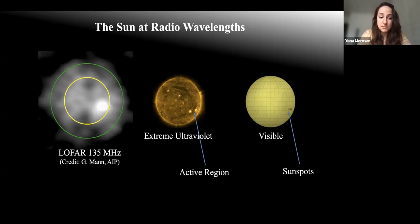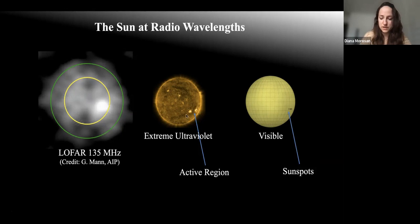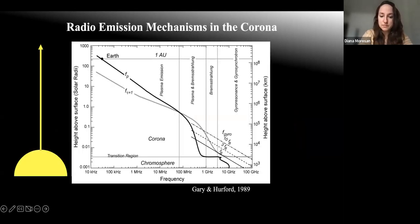We're familiar with what the sun looks like in visible light, with sunspots. At other wavelengths, such as extreme ultraviolet, we see the solar corona. In UV, above sunspots, we see bright regions called active regions, where most solar activity originates. If we go to radio, it's not such a pretty picture. All we see is a very fuzzy blob, especially at low radio frequencies — anything below 400 megahertz. This is a LOFAR image, one of the first LOFAR images of the quiet sun.